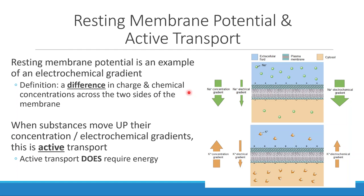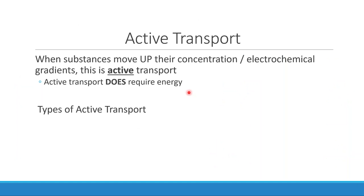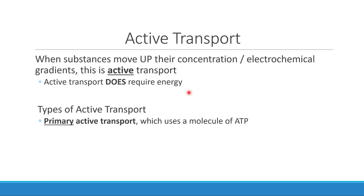Resting membrane potential isn't the only thing we use active transport for, but it's one of the most important. Active transport in general is something that requires energy. There are two different forms of energy we use, which define our types of active transport. The first kind is ATP, which is our cell's energy money. If we're using ATP to move things — doing active transport — we call that primary active transport.